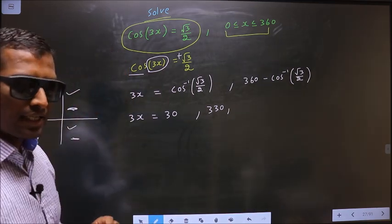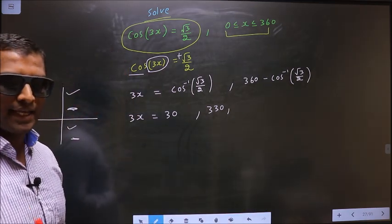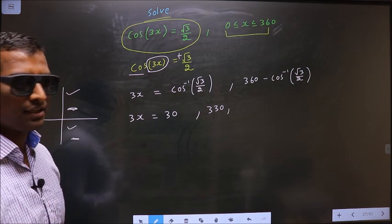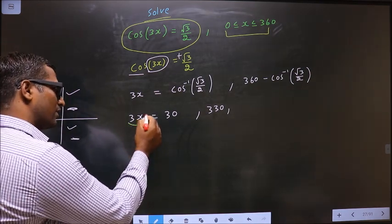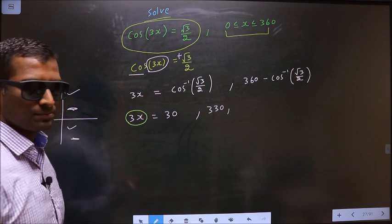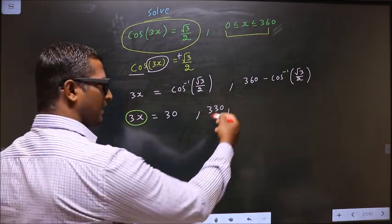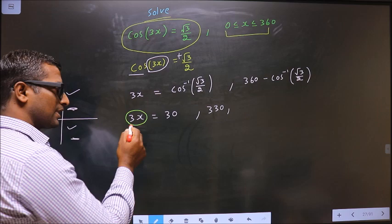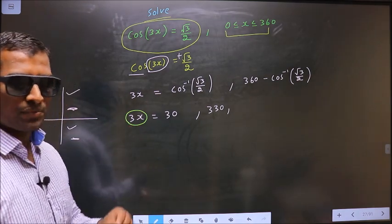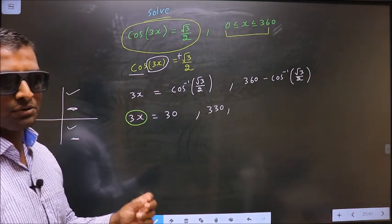Now the question arises, in what interval should the values for 3x lie? And also, shall I find more values for this or not? To answer that, we do this.